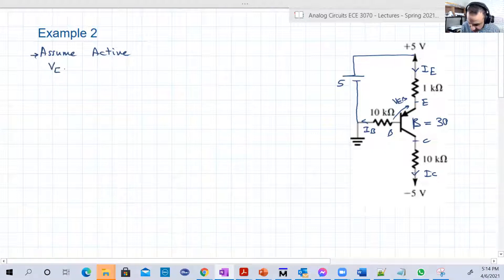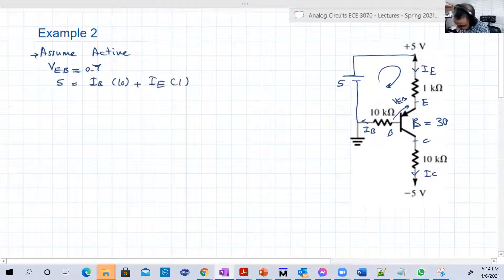So VEB, if we assume active VEB will be 0.7. So let's make the Kirchhoff here. So 5 equal to IB 10 kilo ohms, which is RB, plus IE 1 kilo ohm, which is RE, plus 0.7, of course, plus VEB. We see this Kirchhoff voltage loop in the previous example as well, but with no RB, there was no RB. Now we have RB, 10 kilo ohms.